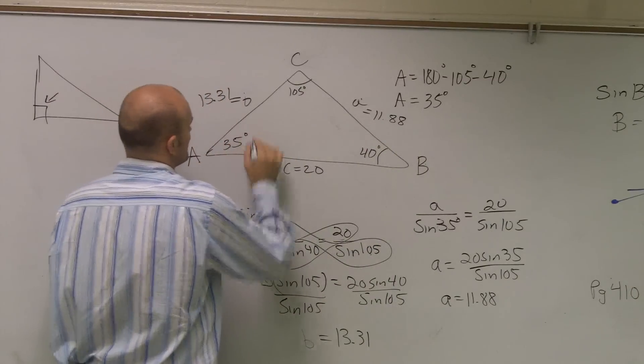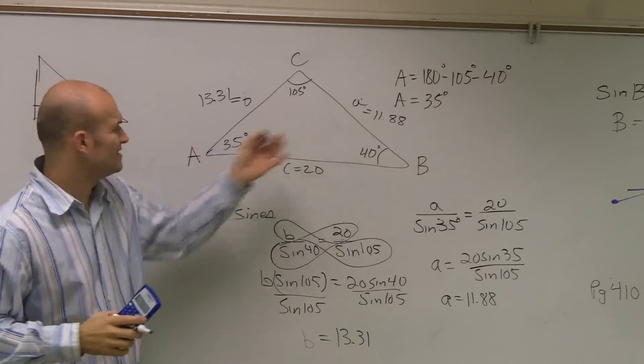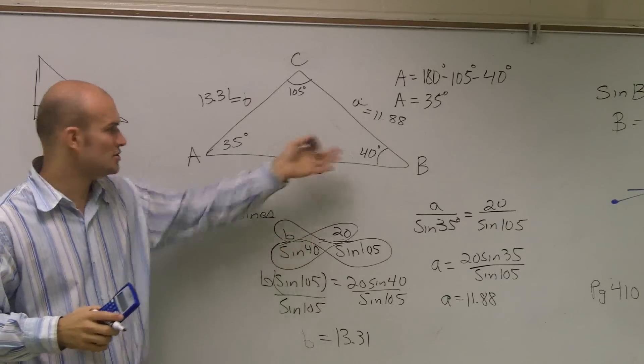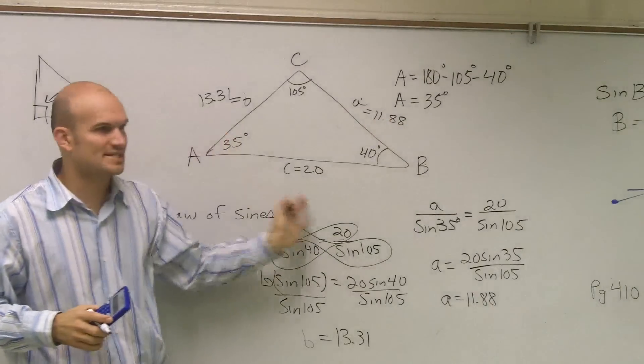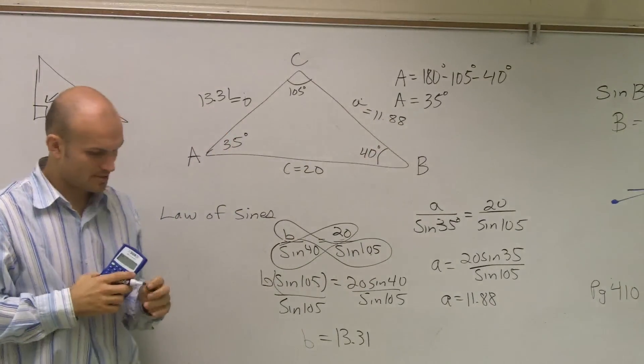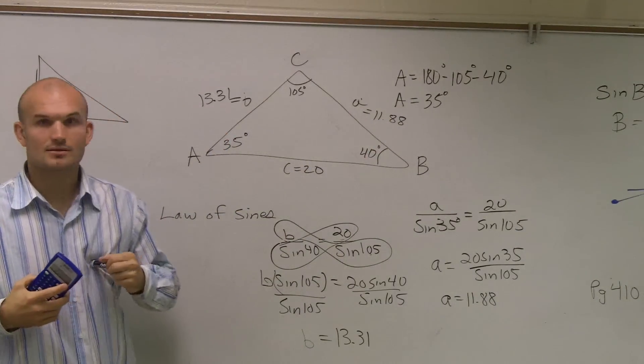So A equals 11.88. Here's 35 degrees. I know all the angles add up to 180. Do these side lengths seem reasonable? There's no 4,000 side length, right? So they seem like they'd be reasonable. Therefore, that's it. That's all you guys have to do.